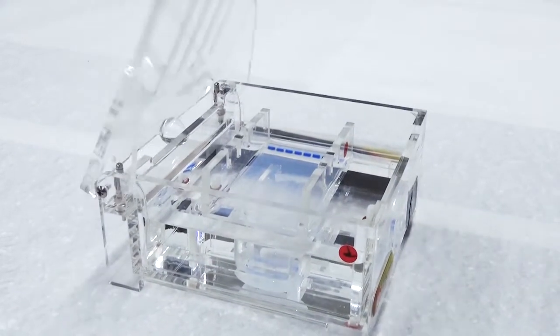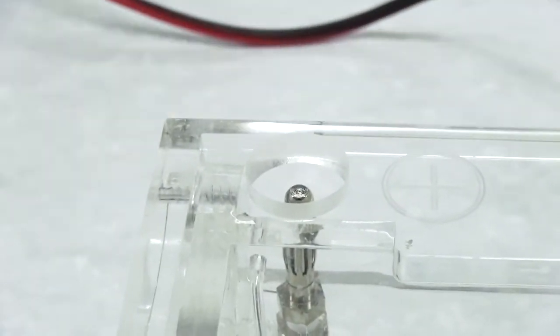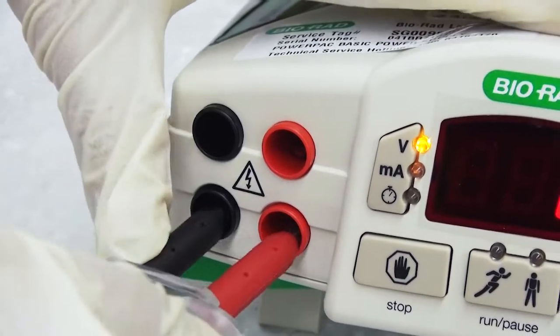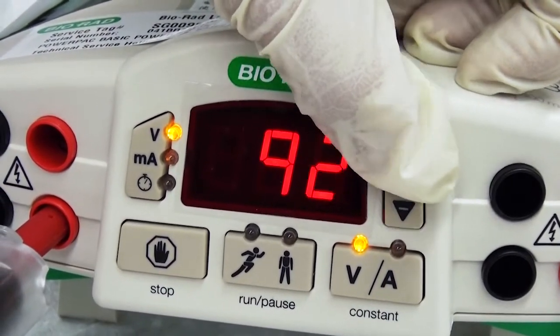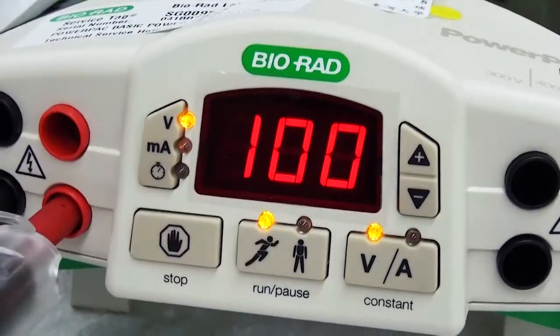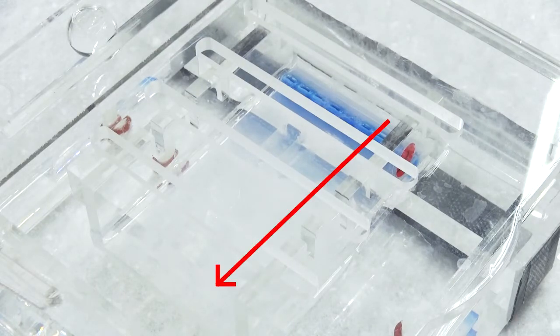Attach the lid and power cords. Black to black and red to red. Set the machine to run at 100 volts. Watch for bubbles to appear around the electrode and make sure the tracking dye moves toward the positive electrode.